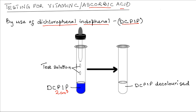Then we add the test solution dropwise — that is, drop by drop — into the DCPIP in the test tube, and shake well after each drop.